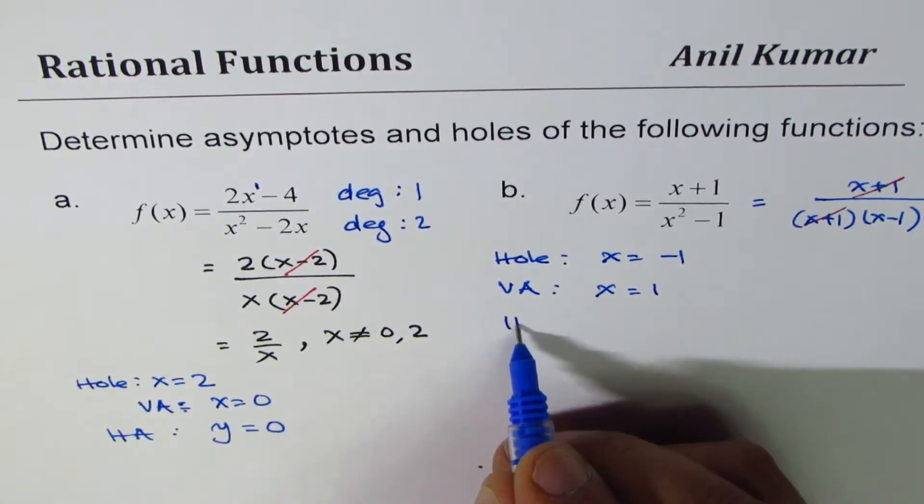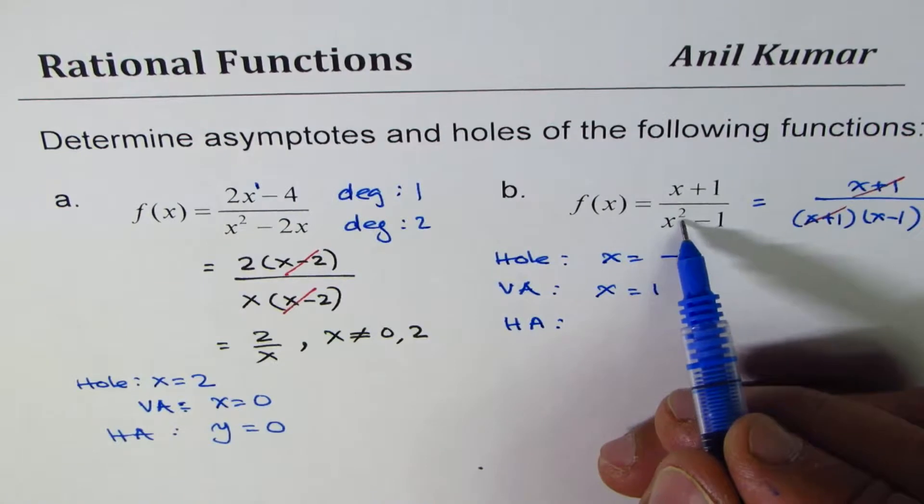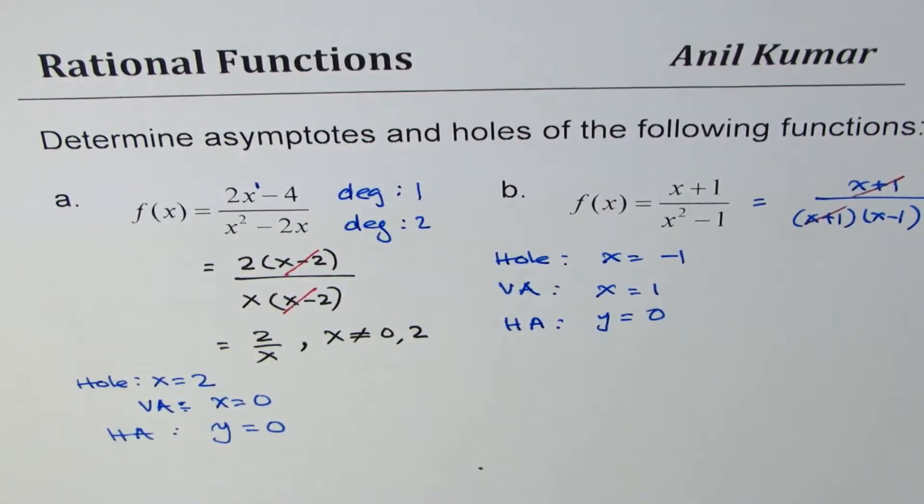How about the horizontal asymptote? Compare the degrees. Degree of denominator is higher, y equals 0. Perfect. So these two are very similar graphs. Let's sketch them now.